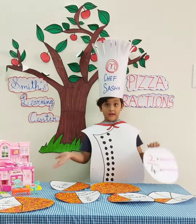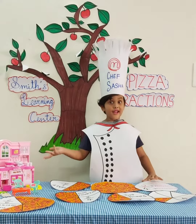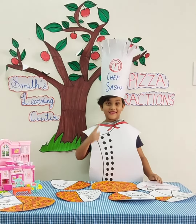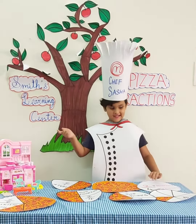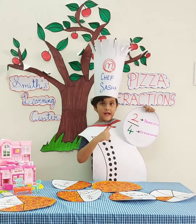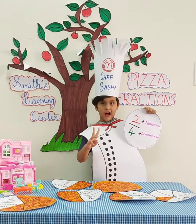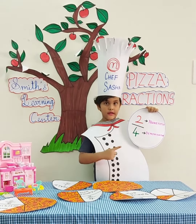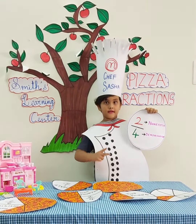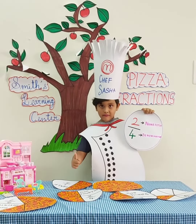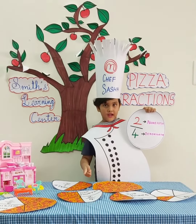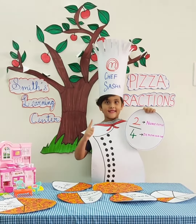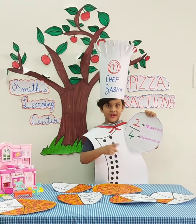We are learning about pizza fractions. What is a fraction? A fraction has two parts. The number above the line is called the numerator — it tells us how many parts are taken from an object. The number below the line is called the denominator — it tells us how many parts there are in an object.